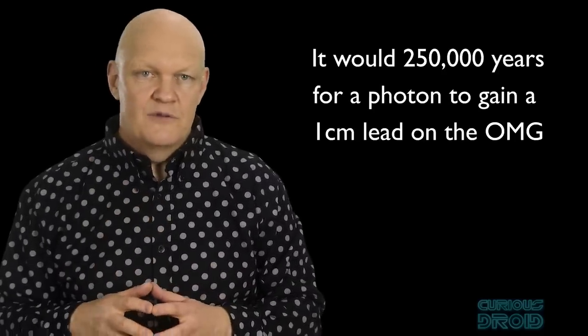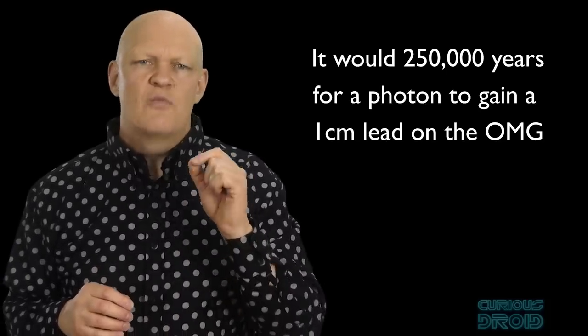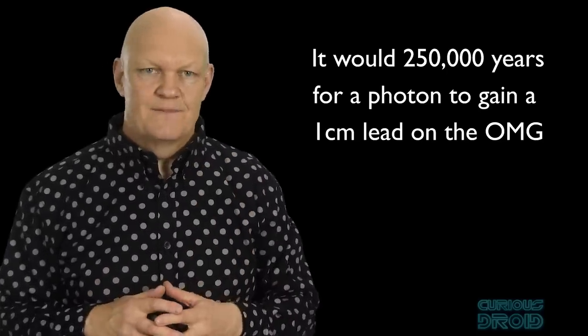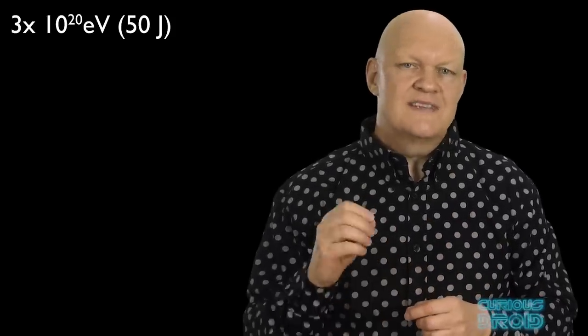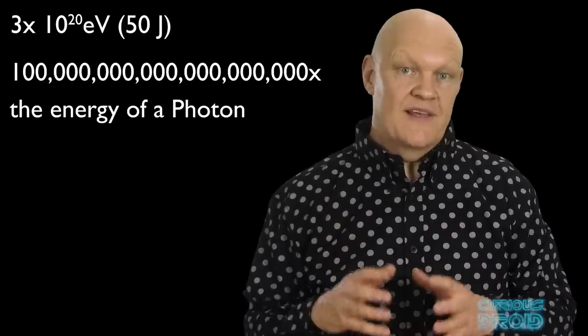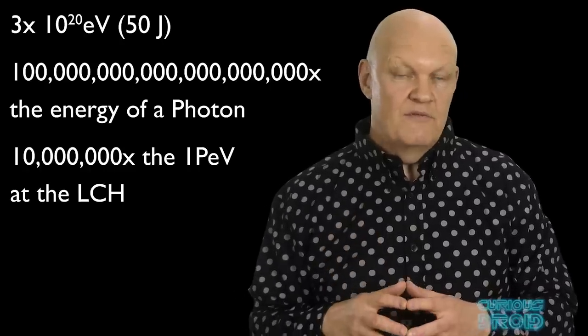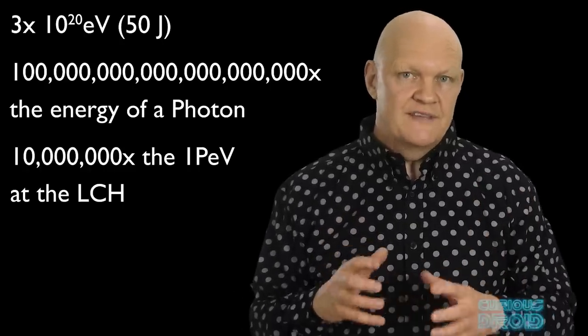It's so fast that if a photon and an OMG particle got into a race and they both started at exactly the same time, it would take 250,000 years for the proton to gain a 1cm lead. The amount of energy this particle had was 3 times 10 to the power of 20 eV, or a hundred billion billion times more than that of a photon of light, and 10 million times more than the 1 peta electron volt created at the LHC.